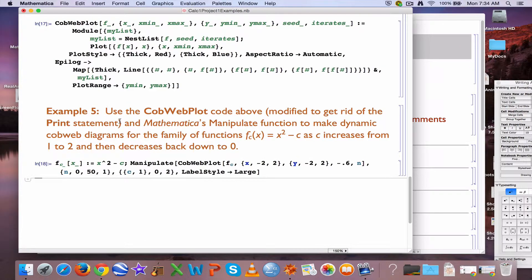Let's start by reviewing the example from the end of the last video. In this example, we had a family of functions, one function for each value of c: f sub c of x is x squared minus c. Of course, as c increases, this graph gets shifted down further. You have one graph for each fixed value of c, but what's interesting is seeing what happens as c changes.